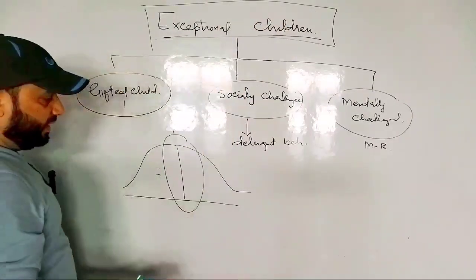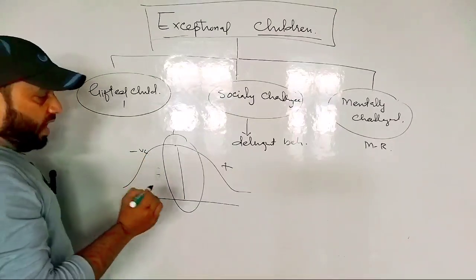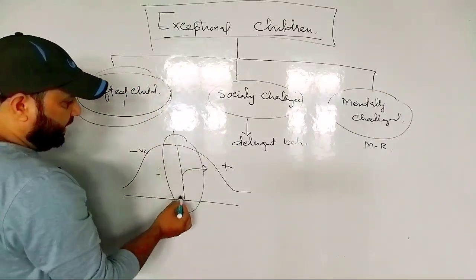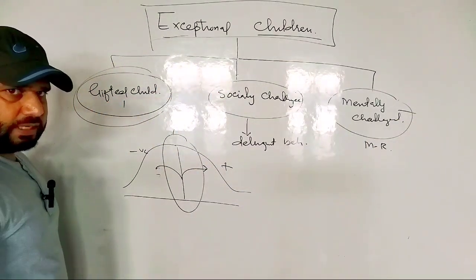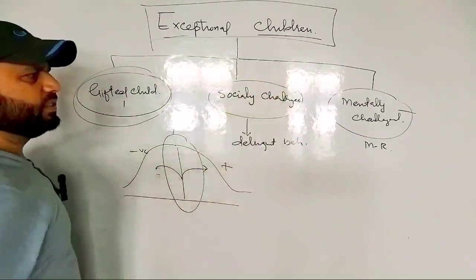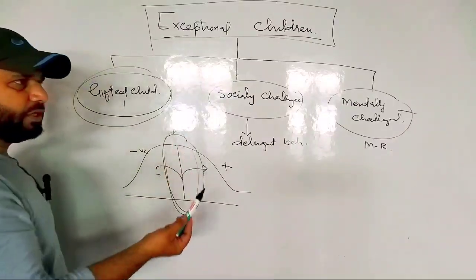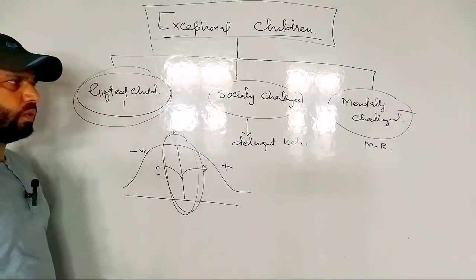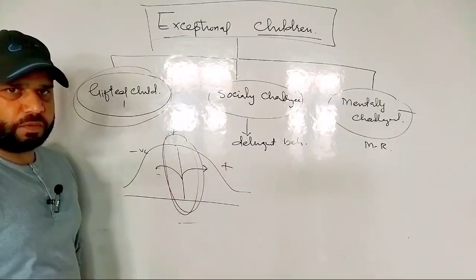Exceptional children are children who deviate from the normal line, either towards the higher or lower side. If the deviation is positive, we call them gifted. If the deviation is negative, they are called mentally challenged. This classification is based on IQ, and we use the normal probability curve for this.